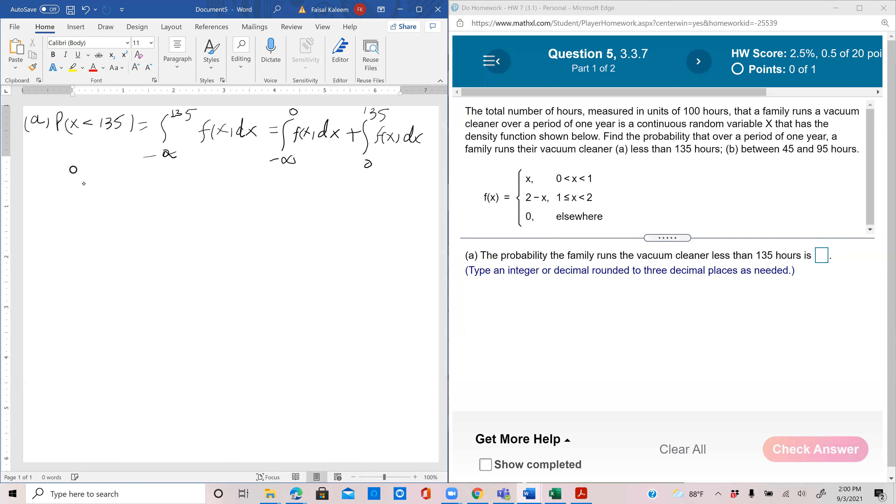Let's just rewrite this fx: fx is actually x when x is between 0 and 100, and it's 2 minus x when x is between 100 and 200. This part is 0 because between negative infinity to 0 this is 0, so this is gone.